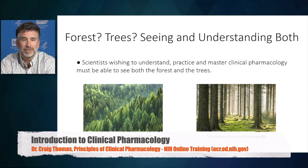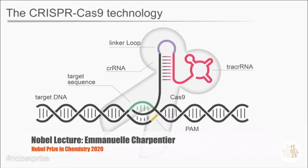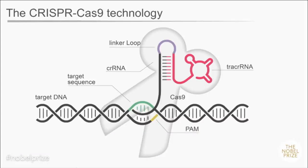Analogy. Any scientist wishing to understand, practice, and master clinical pharmacology must be able to see both the forest and the trees. Our brain is lazy and we don't like to remember facts. The Cas9 protein is like a pair of scissors — a protein component called Cas9 that is represented on this slide as scissors. Immediately you are aware that this is about cutting the DNA. This protein Cas9 has the ability to recognize a certain specific sequence on the DNA and cleave it.